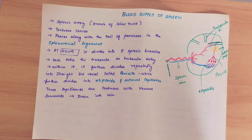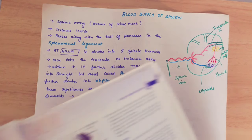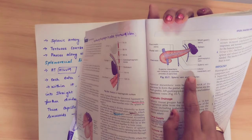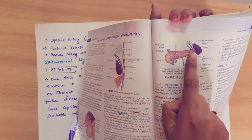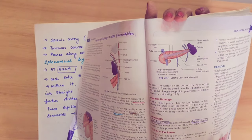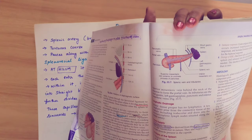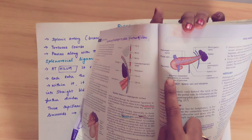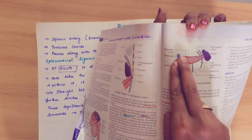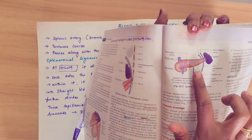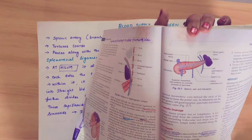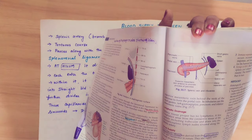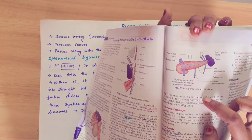Coming to the venous drainage — we can see the diagram. The spleen is posterior to the pancreas. The splenic vein joins the superior mesenteric vein to form the portal vein. The tributaries that drain into the splenic vein include the short gastric vein and the inferior mesenteric vein.